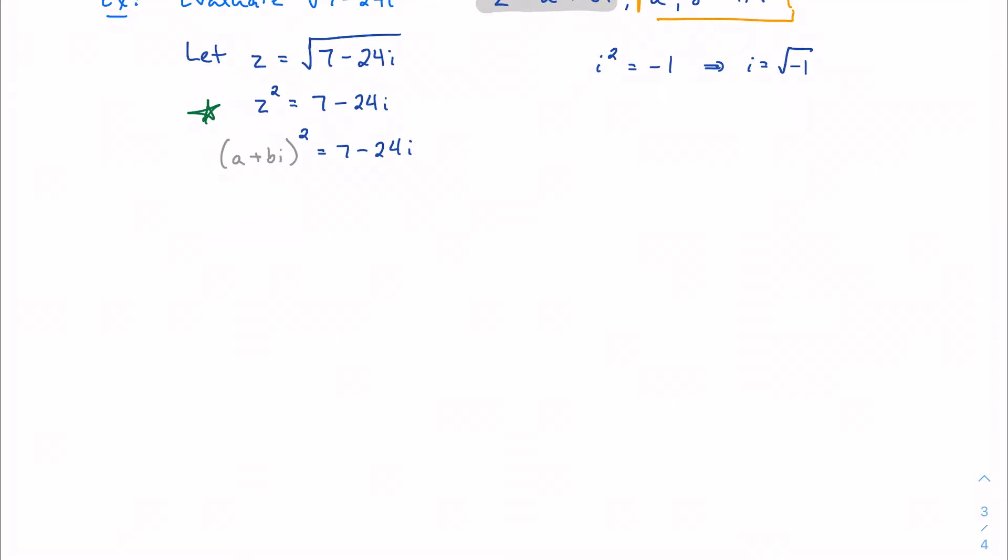We'll just apply our properties of squaring a binomial. Normally this would be b squared i squared, but we know that i squared is negative 1, so I can change this to minus b squared equals 7 minus 24i.